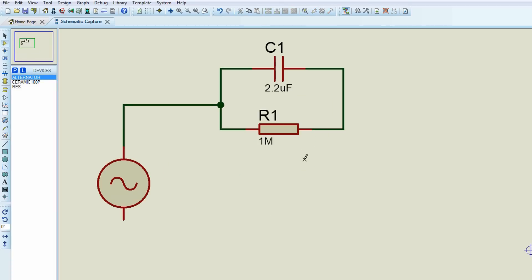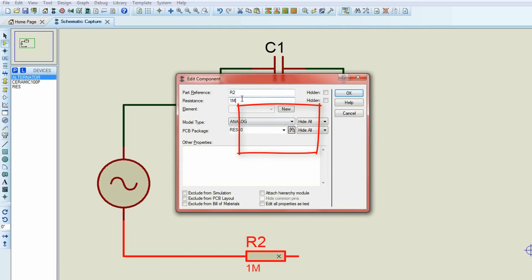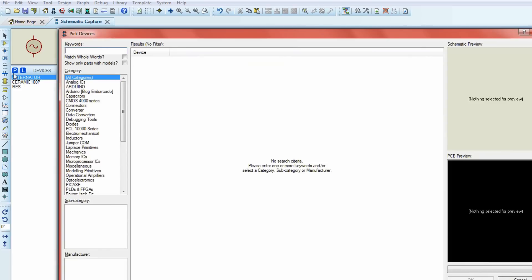A 1 mega ohm resistor is connected in parallel of capacitor to discharge the stored current in the capacitor when circuit is switched off for preventing from electric shock.